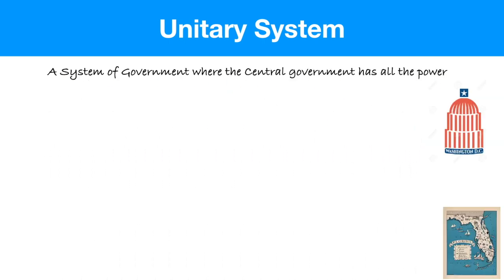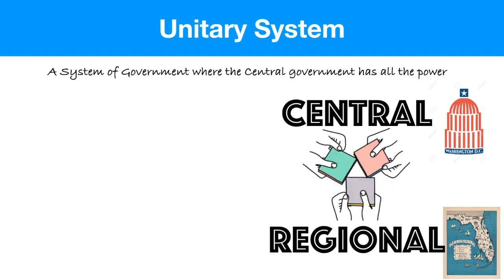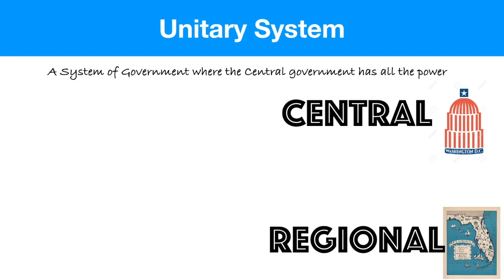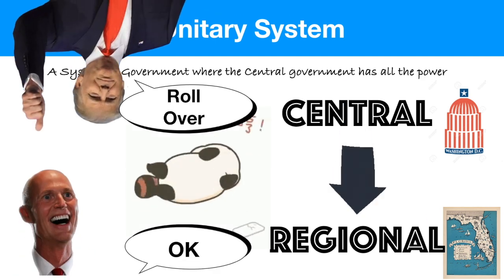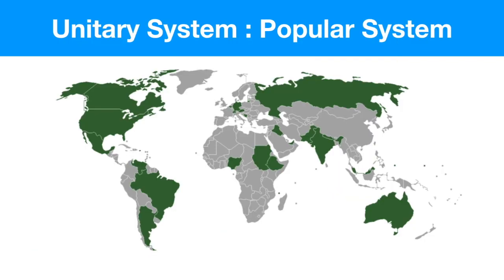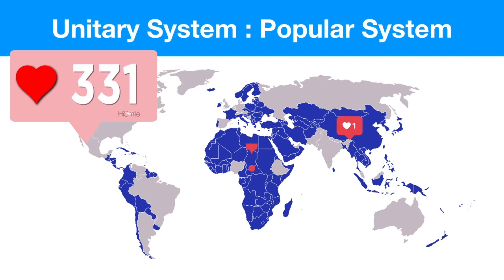The most common system is the unitary system, defined as a system of government where the central government has all the power. The central government tells the regional governments how to run things. Here's a map of countries with a federal system, and here's a map of countries with a unitary system — you can see it's by far the most popular system in the world. It's simply easier when one central authority directs everyone else.